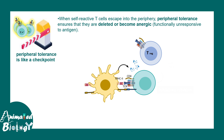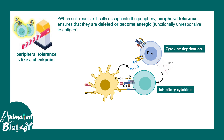One of the key players is the T-regulatory cell. T-regulatory cells secrete inhibitory cytokines such as interleukin-10 and TGF-beta, which render T-cells inactive. T-regulatory cells also upregulate interleukin-2 receptors, which scavenge most of the interleukin-2 necessary for T-cell activation, thereby depriving those cells of cytokines and making them inactive or anergic.